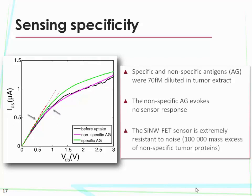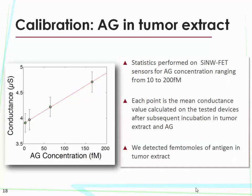So we can say that our sensor is resistant to noise — and we have to remember that the noise here is a 100,000-fold mass excess of non-specific proteins inside the tumor. We also ran statistics on many nanowires across a wider range of concentrations, and as we can see from this graph, there is an increase of conductance as a linear function of antigen concentration.